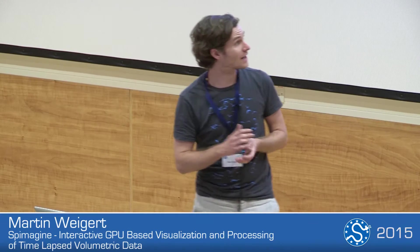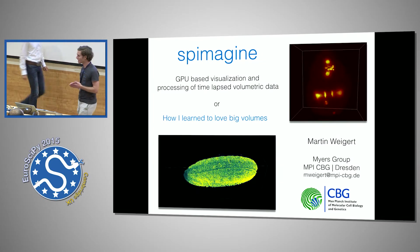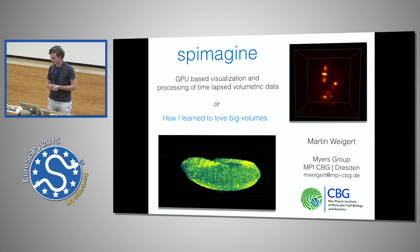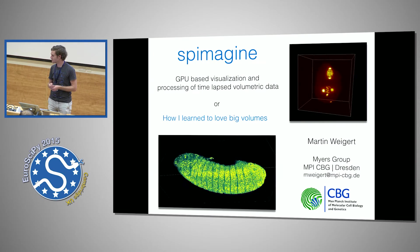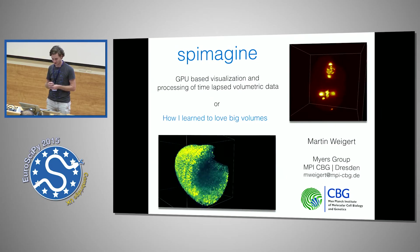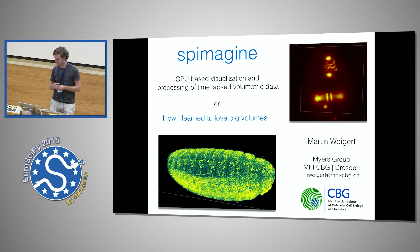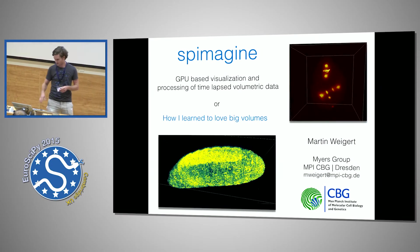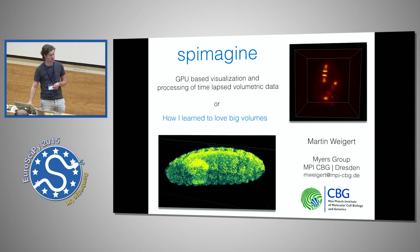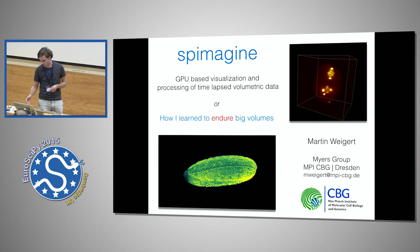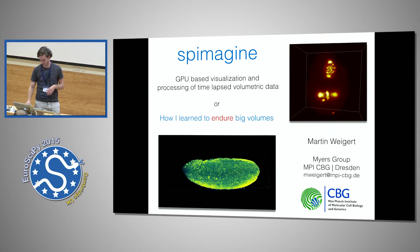My name is Martin Weigert. I'm from the Gene Meyers Group at the Max Planck Institute of Cell Biology and Genetics in Dresden. What I will talk about today is how I taught my way to process the big volumes which are appearing in my research. The motto would be probably how I learned to love big volumes, but actually the motto would be more how I learned to endure the processing time involving big volumes.